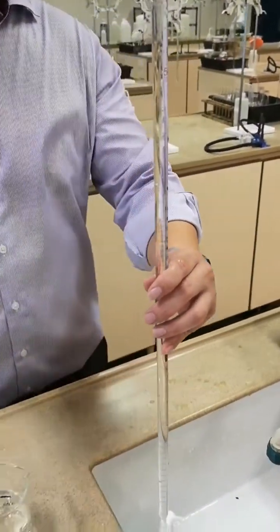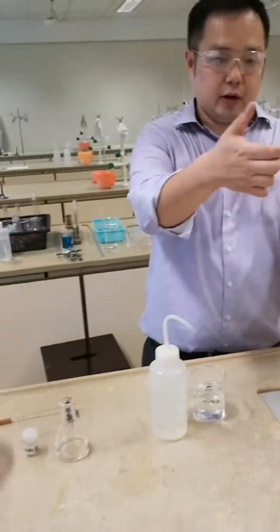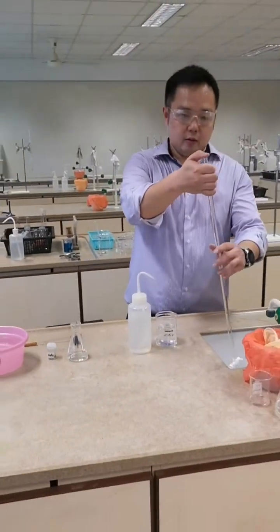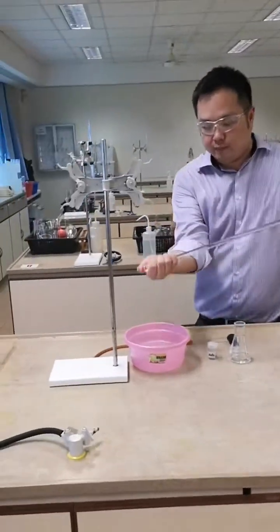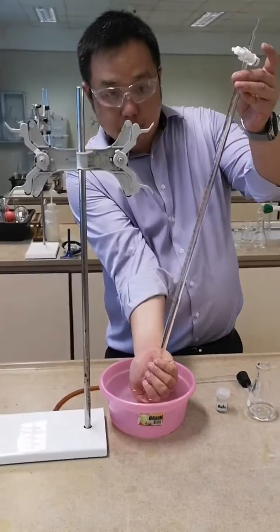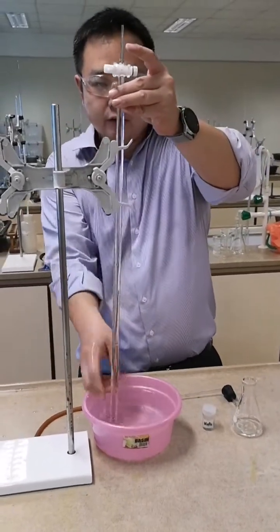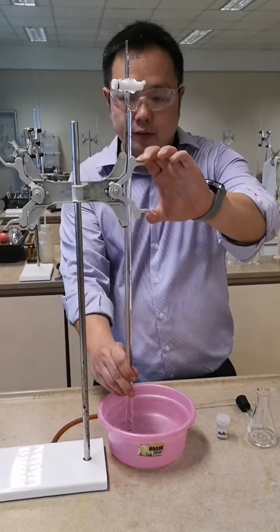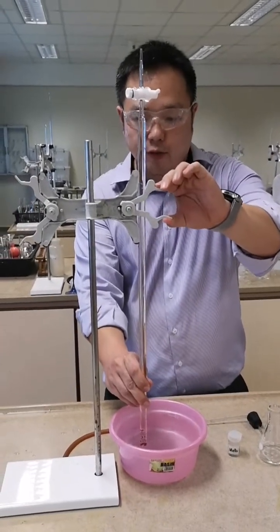With this, cover the mouth of the burette with your thumb, invert the burette and put the mouth of the burette underneath the water before clamping it. This will prevent water from rushing out of the burette.